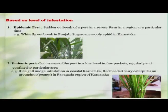Based on the level of infestation, pests can be classified as epidemic pests, where there will be a sudden outbreak in a quite severe form over a larger area. A recent example is the whitefly outbreak in Punjab and Haryana, where this pest caused real havoc on cotton. Similarly, the sugarcane woolly aphid was quite epidemic some years back in Karnataka and Maharashtra.